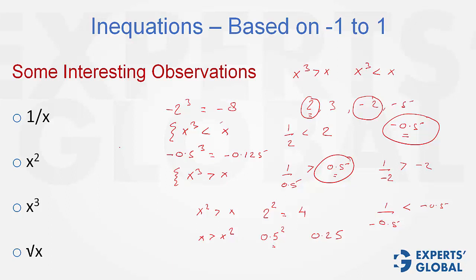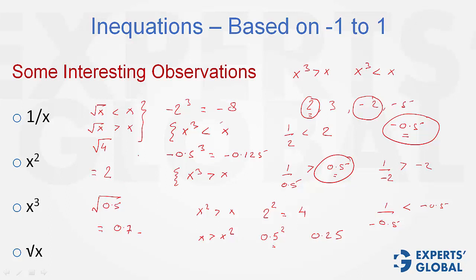Last: root x. We tend to think that if we take the root of a number it has to become smaller. But take a value between 0 and 1 — take the square root of 0.5 — it becomes greater than 0.5; it is 0.7 something. So for big values, root x is smaller than x, but in case of small values between 0 and 1, root x is actually greater than x. Square root of negative values is imaginary, so that's not tested on GMAT. But for positive values, please be aware of these exceptions.